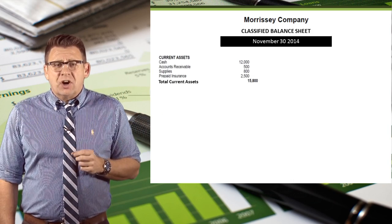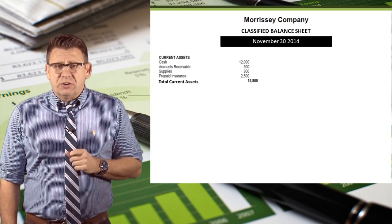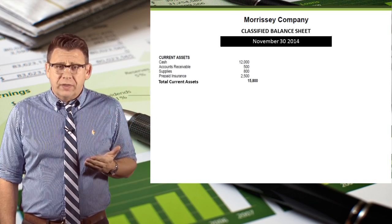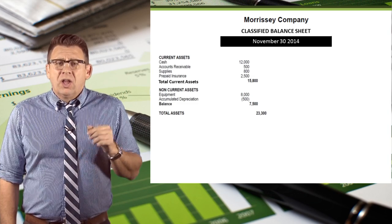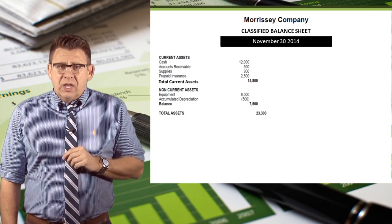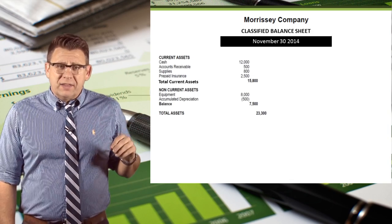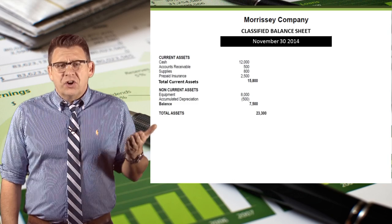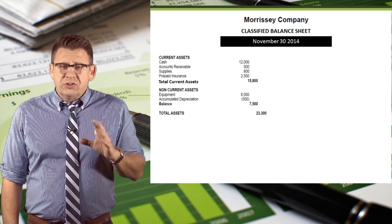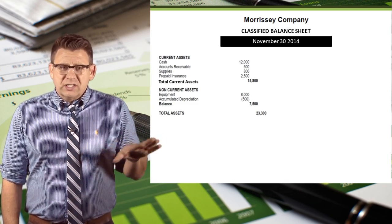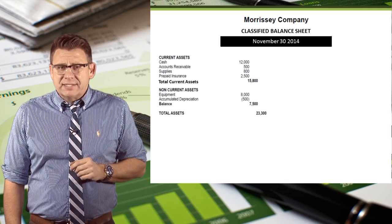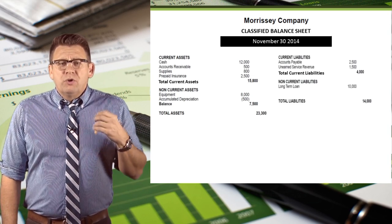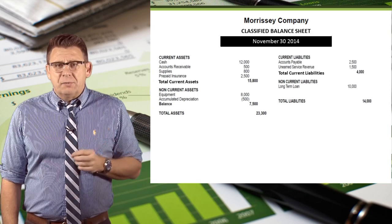On the asset side, we start with the current assets section. Here we list our current assets in order of liquidity, and then total them. Next we prepare our long-term assets section. These items are often grouped as investments, plant assets, intangible assets, and other non-current assets. In this introductory video, we'll just list them since all we have are plant assets. Finally, we total our assets.